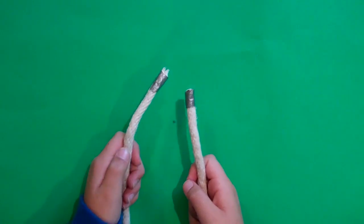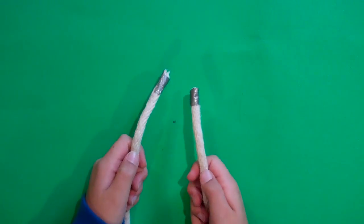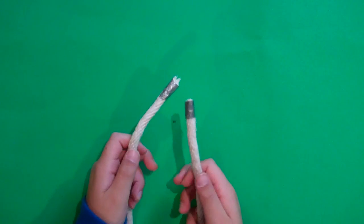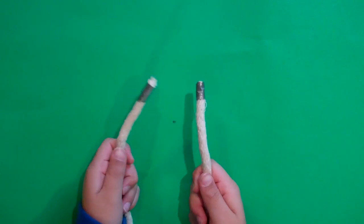The first knot we're going to look at is a square knot. This is a very simple knot that can be used to tie together two pieces of rope.